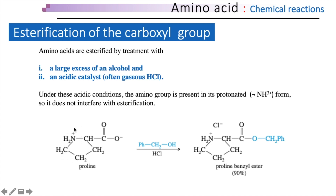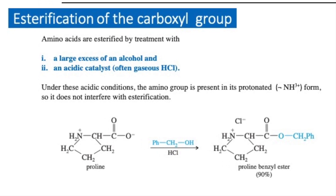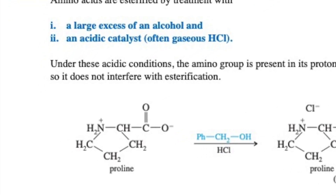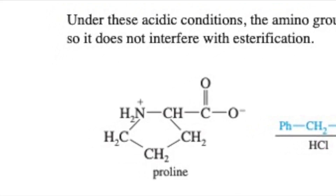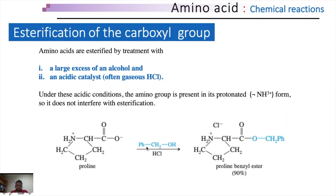Because of this ring formation, its amino group is in the NH2+ form under these acidic conditions. In the presence of benzyl alcohol and HCl, as shown on the top and bottom of the reaction arrow, its carboxyl group is esterified. The product of this reaction is called proline benzyl ester, which is 90% pure.